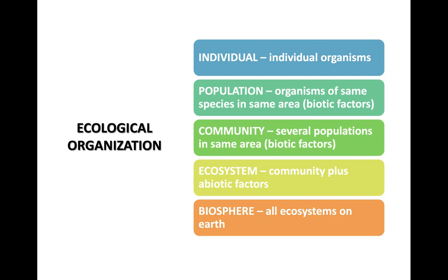At the individual level, we're studying the individual organism. At the population level, we're looking at interactions between organisms of the same species in the same area that make up this population. We can then study communities, where we have several different populations living in the same area. Ecosystems are the community — many different populations or species living together in the same area — plus the non-living, abiotic factors. So at the ecosystem level, this is the first level at which we take into account both biotic and abiotic factors.